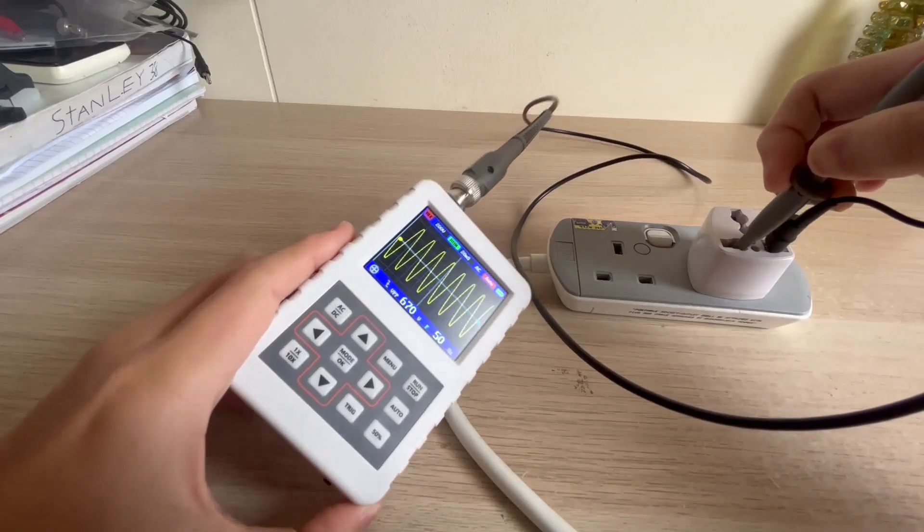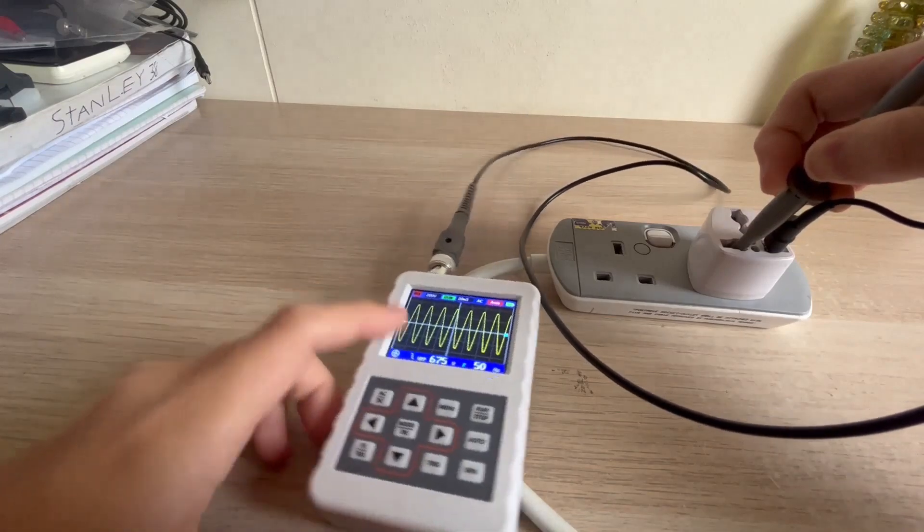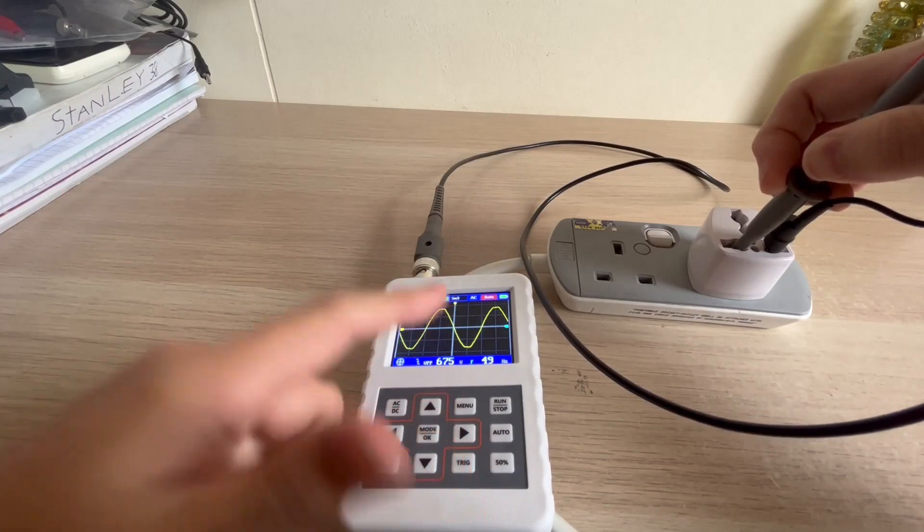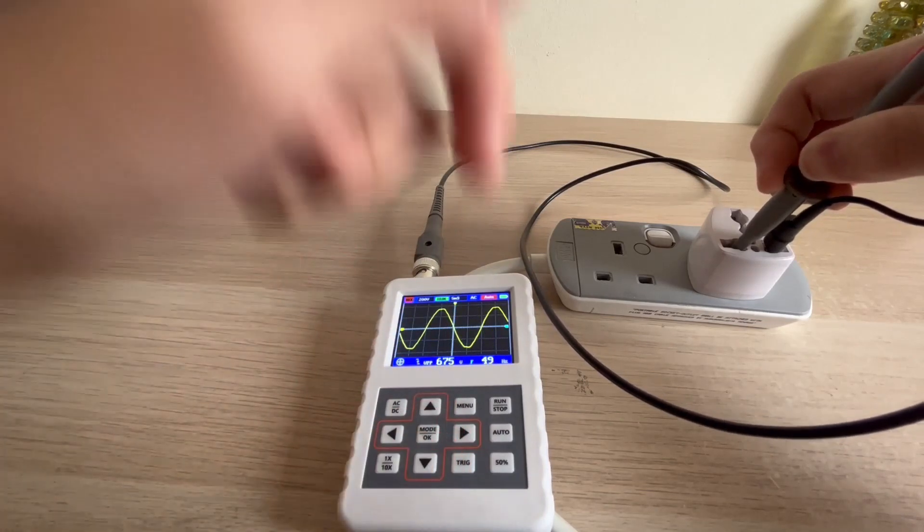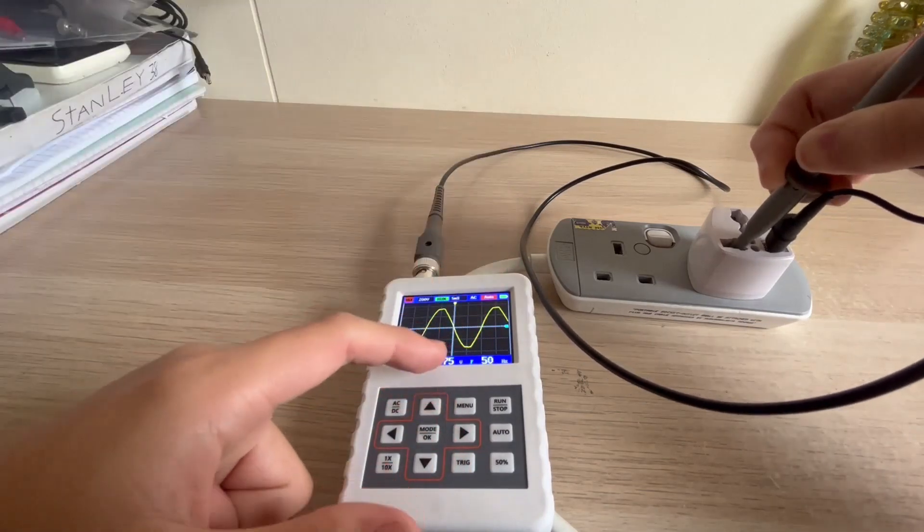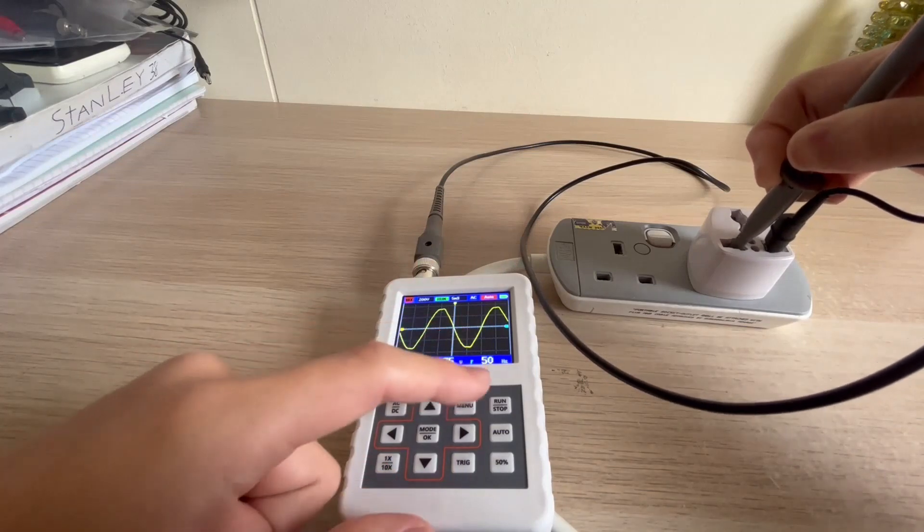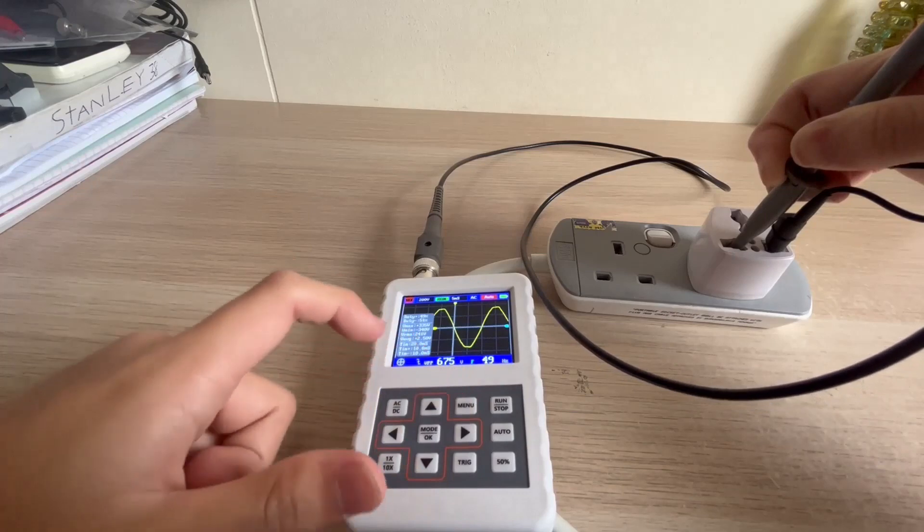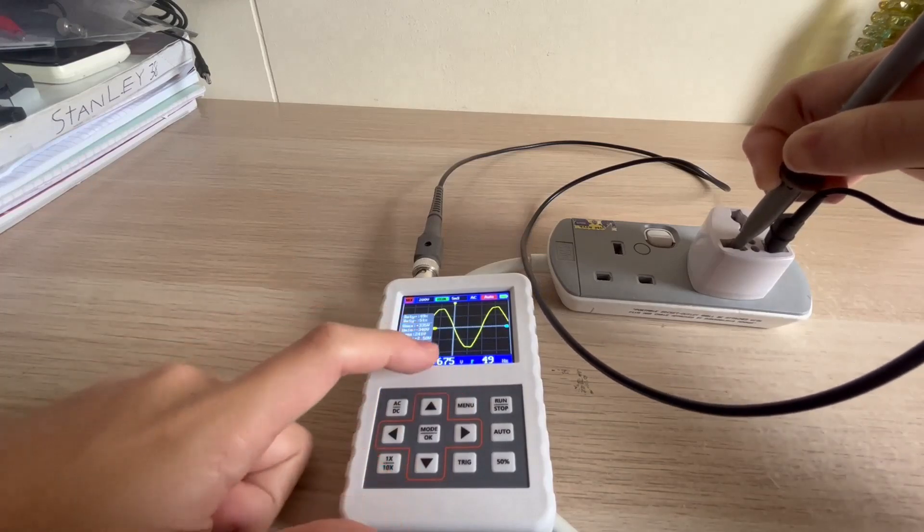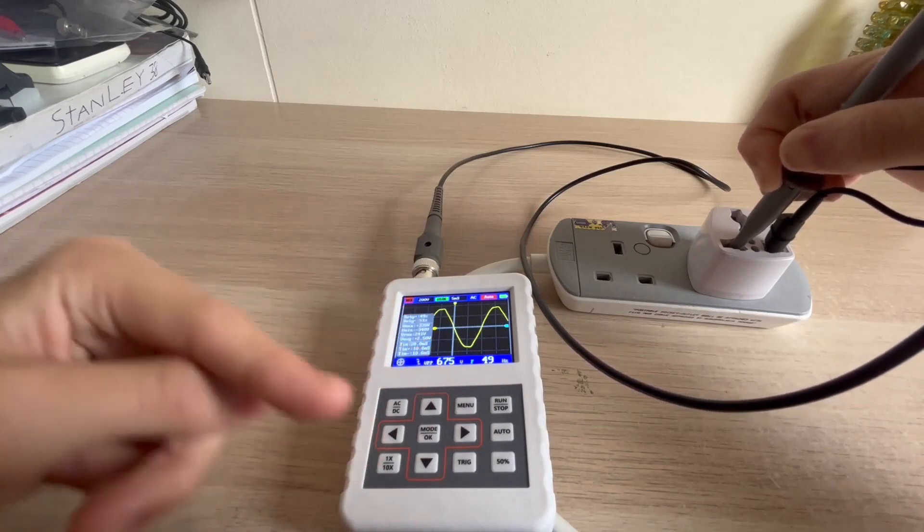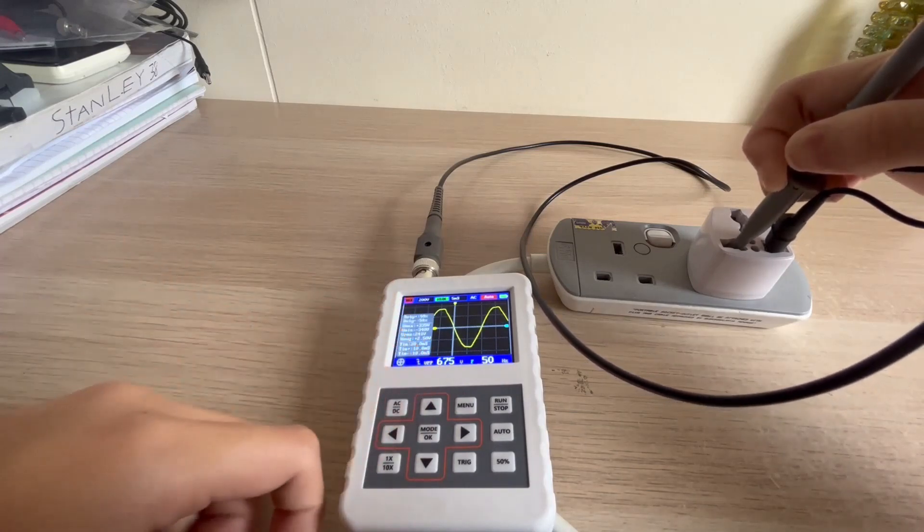All right, there you go. We get a very nice sine wave but you can see that it's quite bumpy here. Do not touch here. This is dangerous. It's 675 volts peak to peak and a frequency of around 50 hertz. RMS is 241 volts. Duty is around 50 percent which corresponds to that of the multimeter. So that's awesome.